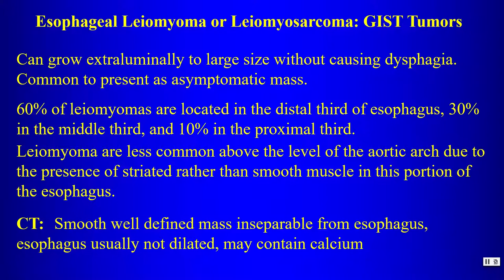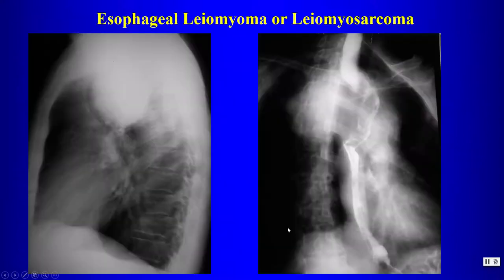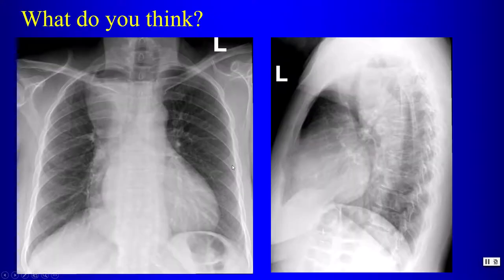Gastrointestinal stromal tumors of the esophagus arise within the esophageal wall, most are located in the distal third. They appear as smooth, well-defined masses inseparable from the esophagus, usually do not cause obstruction, and may contain calcification. Here is a larger example — a GIST tumor right next to the esophagus with some encroachment but no significant obstruction.